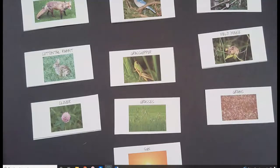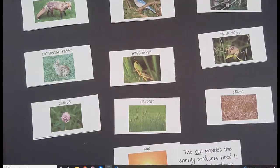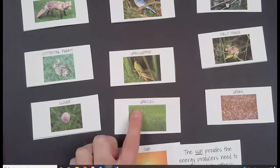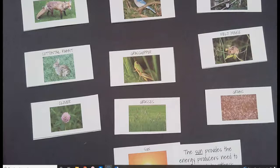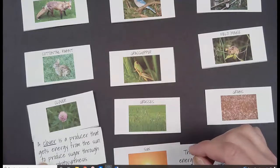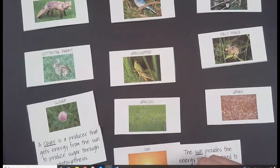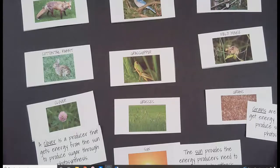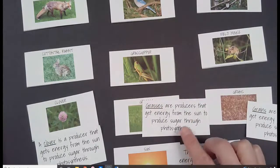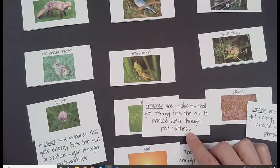Looking at the wording, it says the sun provides the energy producers need to perform photosynthesis. The clover can grow from the sun, the grasses can grow from the sun, and the grains can grow from the sun. A clover is a producer that gets energy from the sun to produce sugar through photosynthesis. Grains are producers that get energy from the sun to produce sugar through photosynthesis. Grasses are producers that get energy from the sun to produce sugar through photosynthesis.